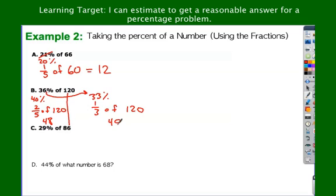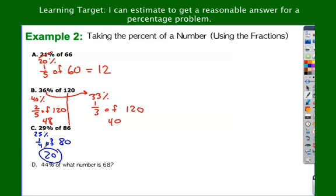29% of 86. I can see a couple of different ways to go. Obviously, we can go down to 25%, which is one-fourth — that's only 4% away. One-fourth of 80 would be the easiest: one-fourth of 80 is 20. Also 4% away is 33% again — that's one-third. One-third of 90 is 30. We're off by a difference of 10 between those two estimates, but again, as long as we're pretty close.